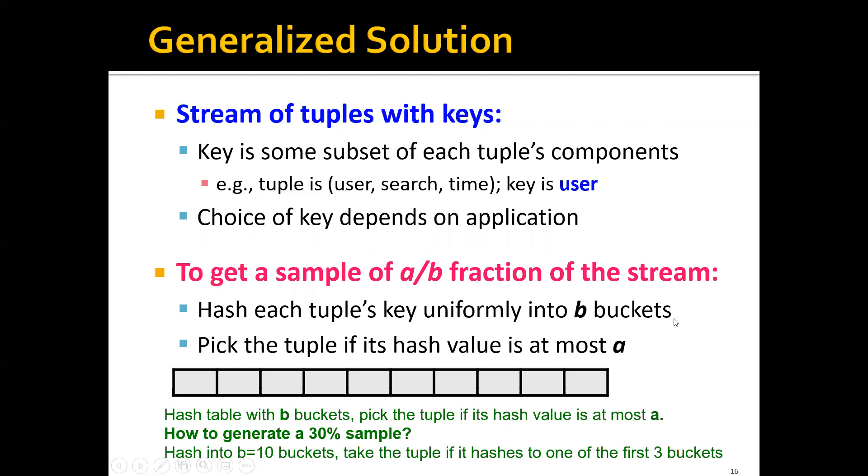To get a sample of a/b fraction of the stream, we can first hash each tuple's key uniformly to b buckets, and then we will pick the tuple if its hash value is at most a. For example, how do you generate a 30% sample? We will first hash the key into b equals 10 buckets, and we'll keep the tuple only if it hashes to one of the first three buckets. This way we get to keep only 30% of the data stream.